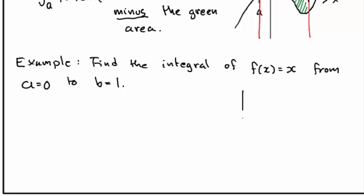Well, if we make a graph of this, it looks something like this. The x-axis, the y-axis, the function f of x equal to x, it's just a straight line like that.